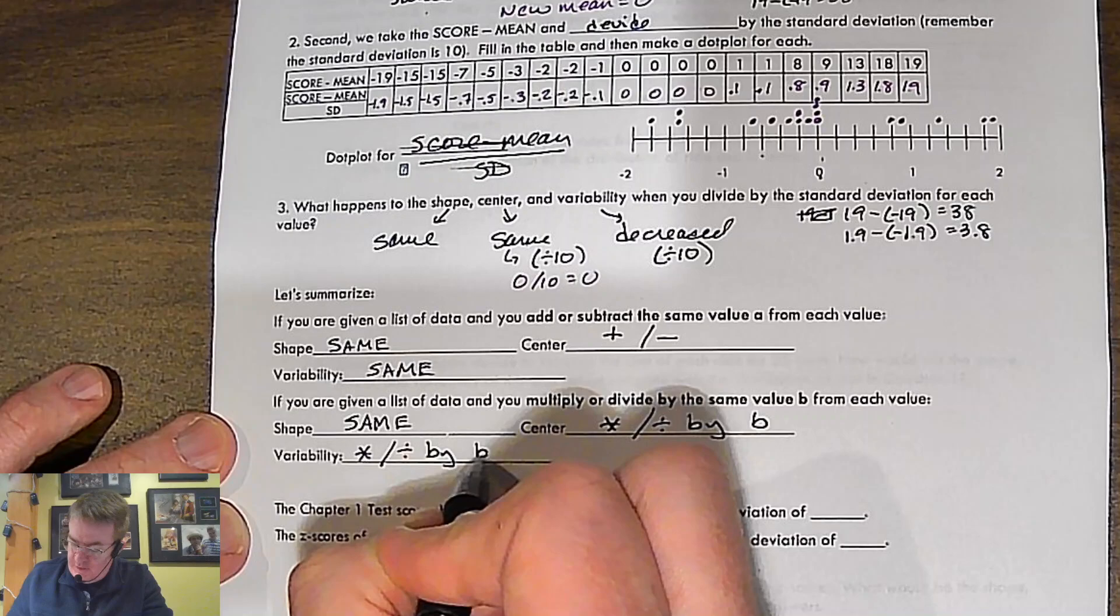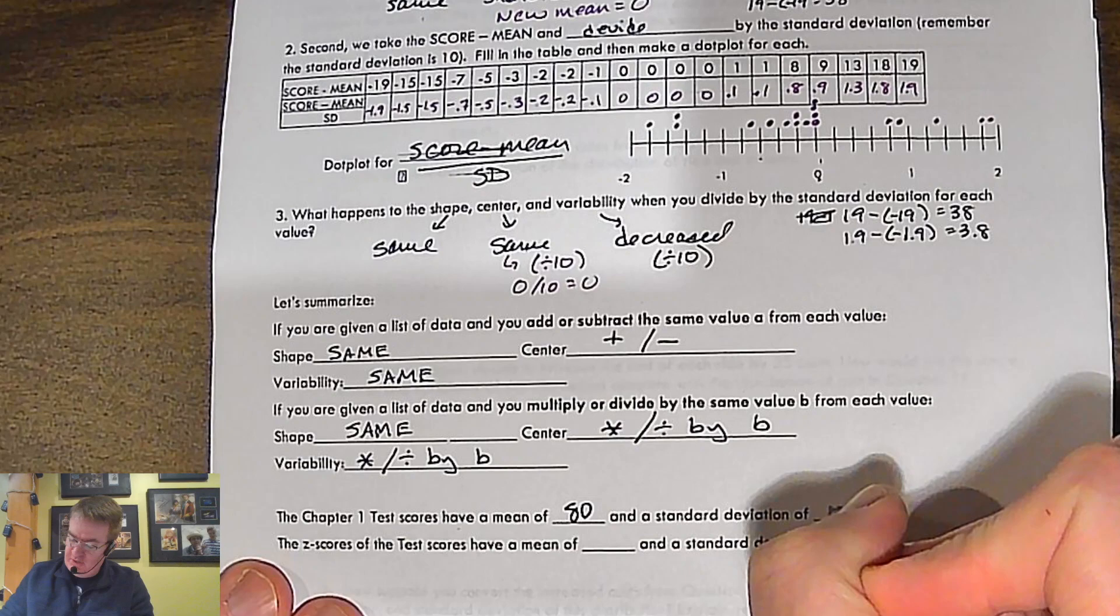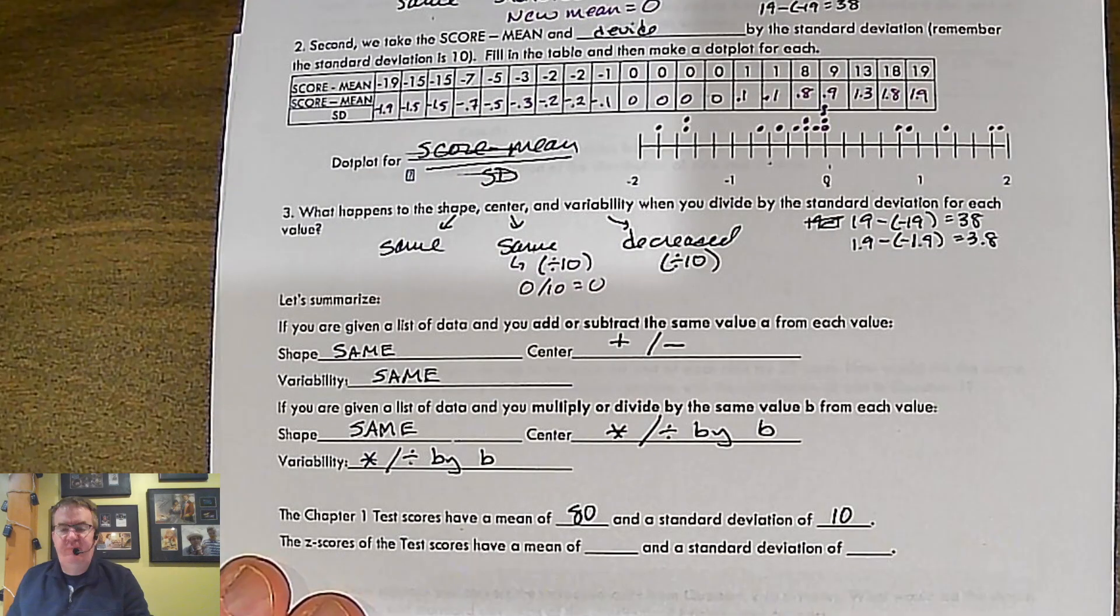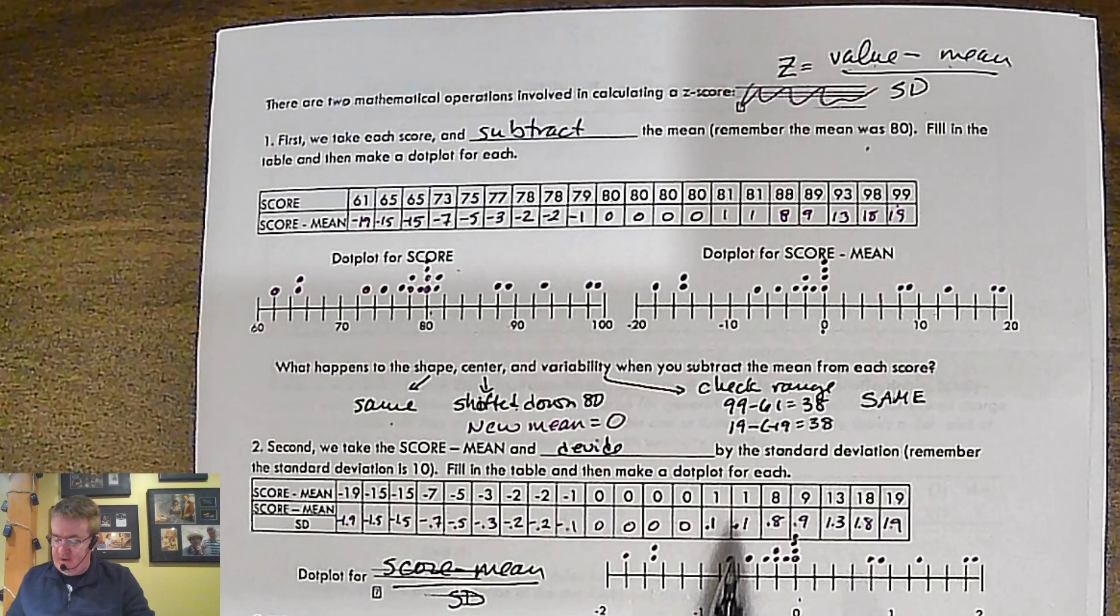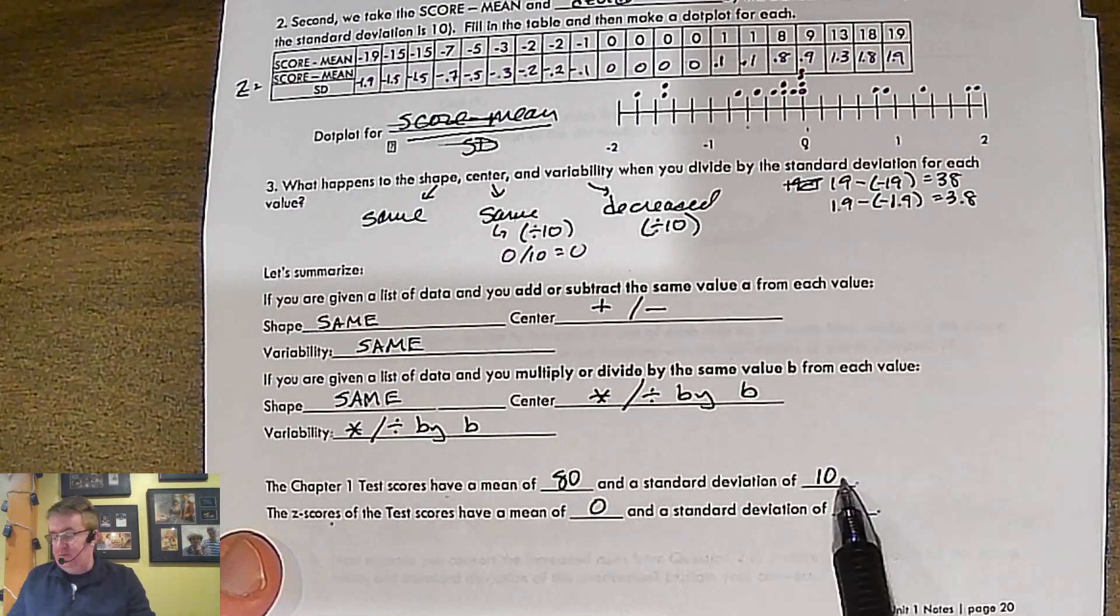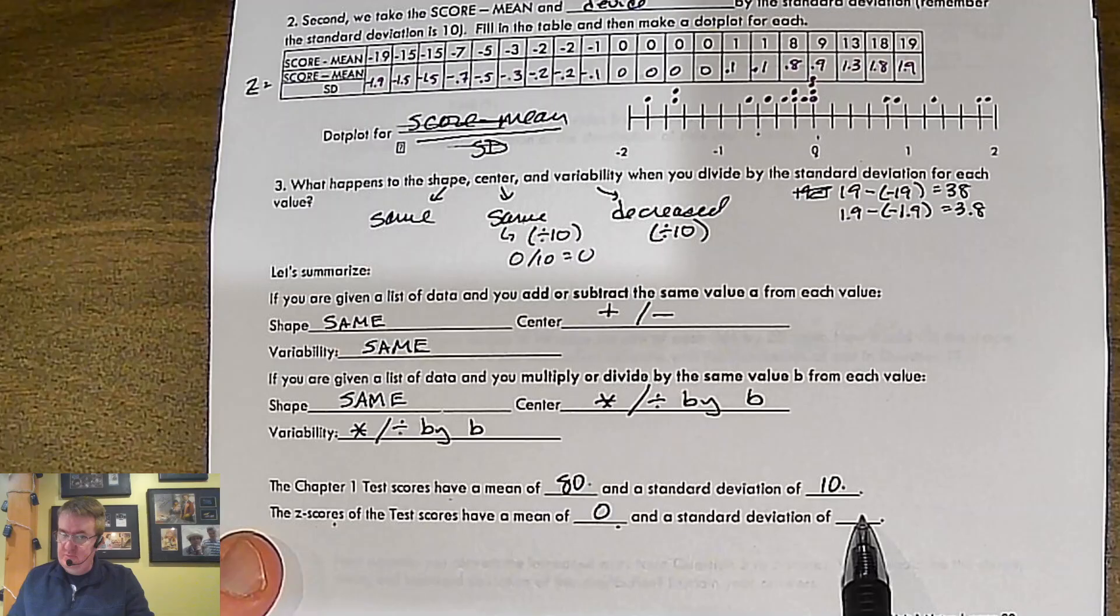So, what happens here? So, the chapter 1 test scores have a mean of 80 and a standard deviation of 10, right? The Z scores, because that's what we did. We took all of these pieces of data, and we subtracted it all and divided it out. So, these are my Z scores right here. What's your mean Z score? We have a mean score of 0. What's your standard deviation going to be? We're dividing everything through by 10. So, since 80 has gone down to 0, 10 is going to go down to 10 as well. It can be 1. Okay? And that's always going to be the case. Four standardized scores.